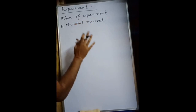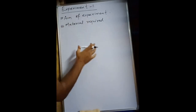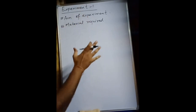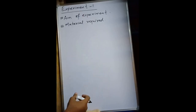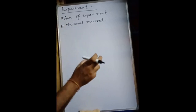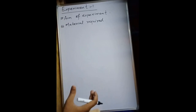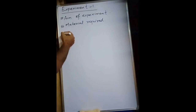The first step you have to follow is the aim of experiment — you will write that in your record book. The second step that you have to follow is material required.